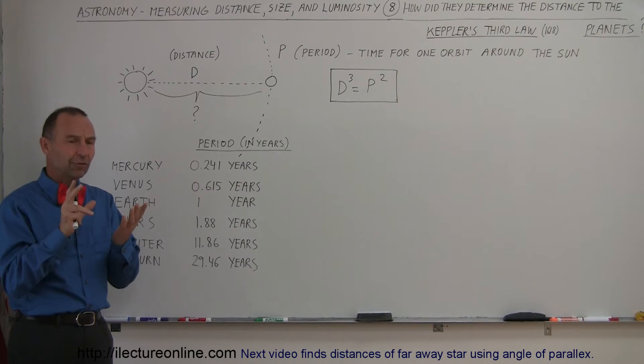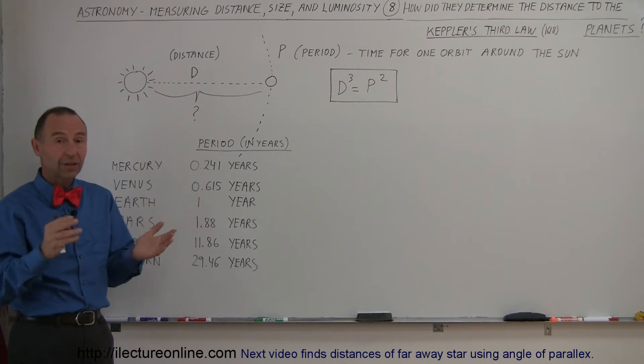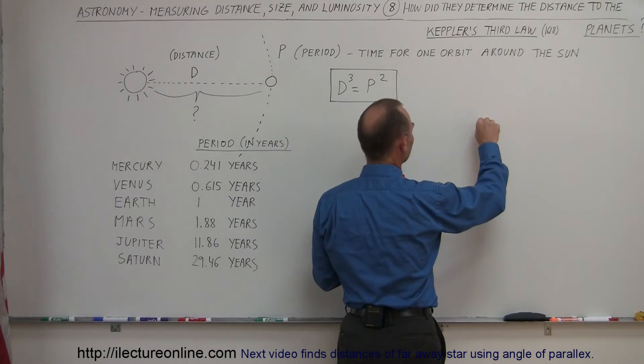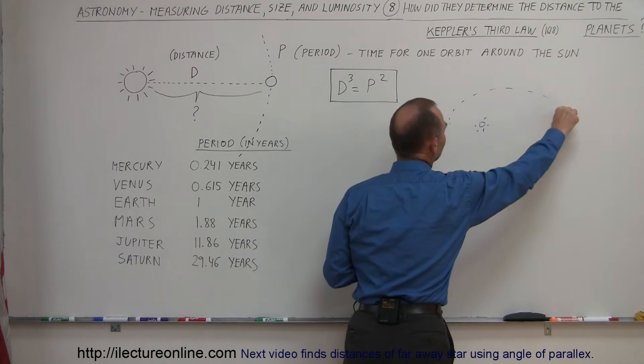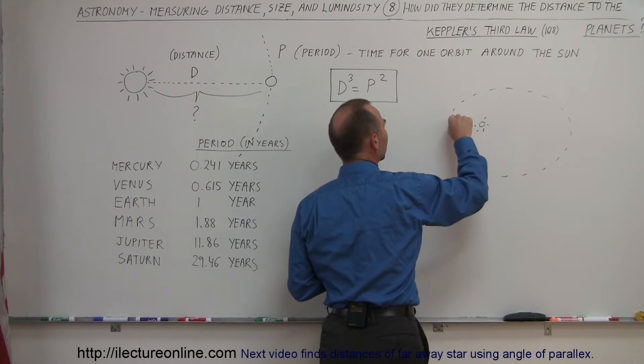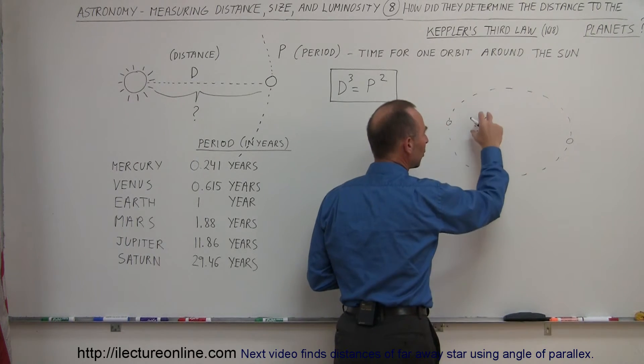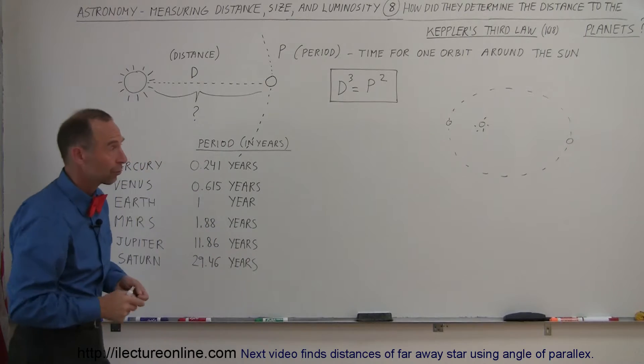He said, first of all, that planets do not go around the sun in circular orbits, they go around the sun in elliptical orbits with the sun at the foci. So if the sun is right over here, the planets would have these kind of orbits where sometimes they would come in close and sometimes be far away from the sun, like in elliptical orbits with the sun at one of the foci of the ellipse. So that became Kepler's first law.